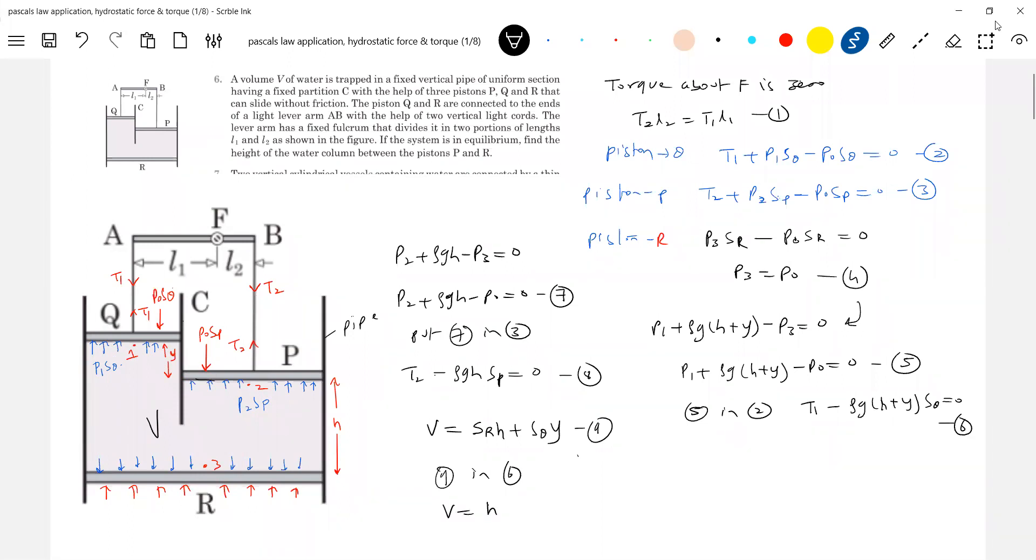And nine put in six, so we'll get here. V equal to h·Sr + y is how much, no? Let me substitute that one. So T1 becomes lengthier. Write in, substituting six in nine will do it. Nine in six, we'll get T1 = -ρg[h + (V - h·Sr)/Sq]·Sq. Okay, agree this. So this will become equation what number shall I do? Ten.